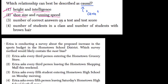Number of correct answers on a test and your test score — yes, that should be causal, right? The more answers you get correct, the higher your score. Or the less answers you get correct, you'll have a lower test score. So that's a causal relationship.